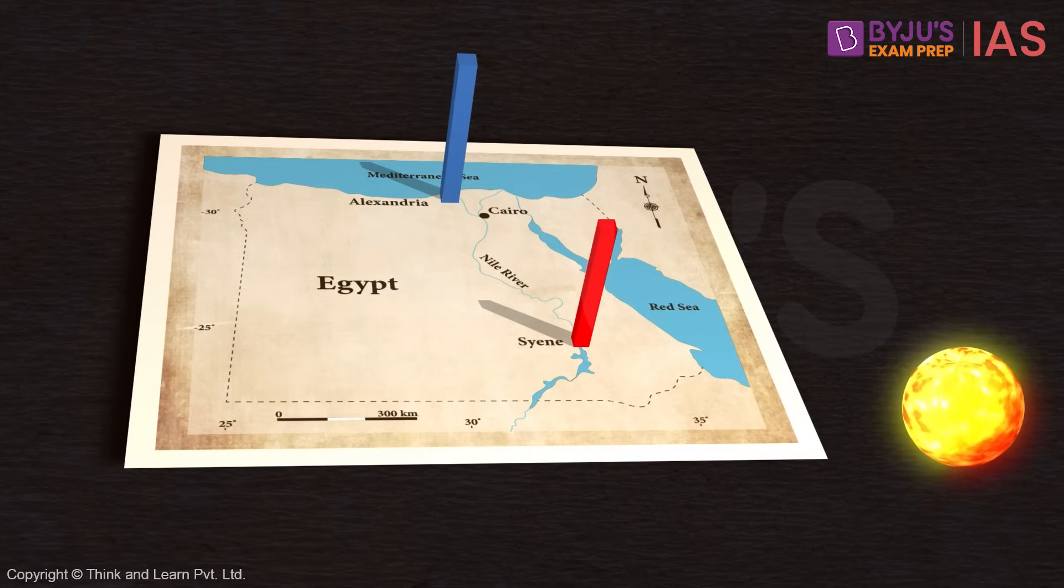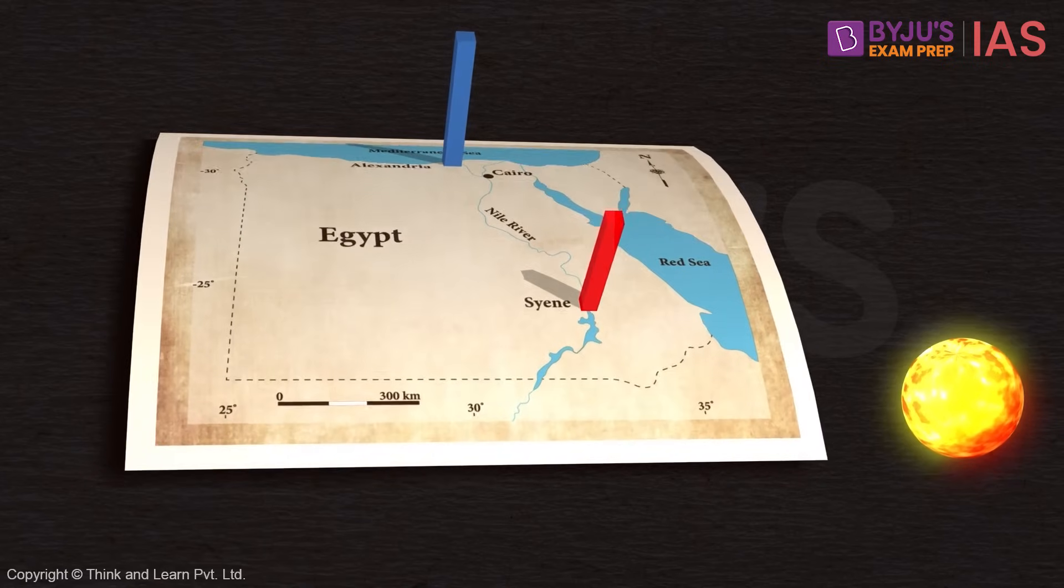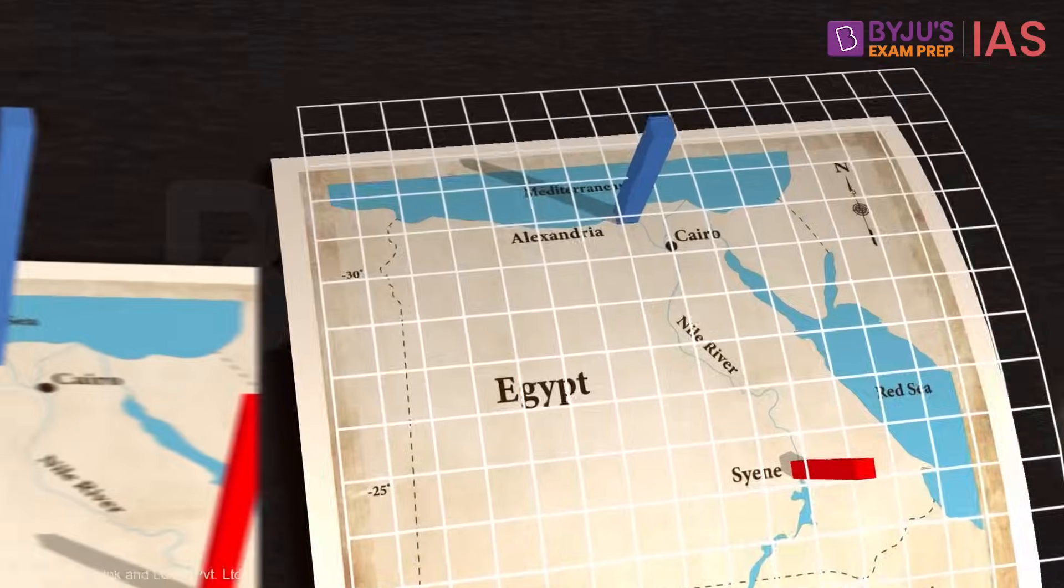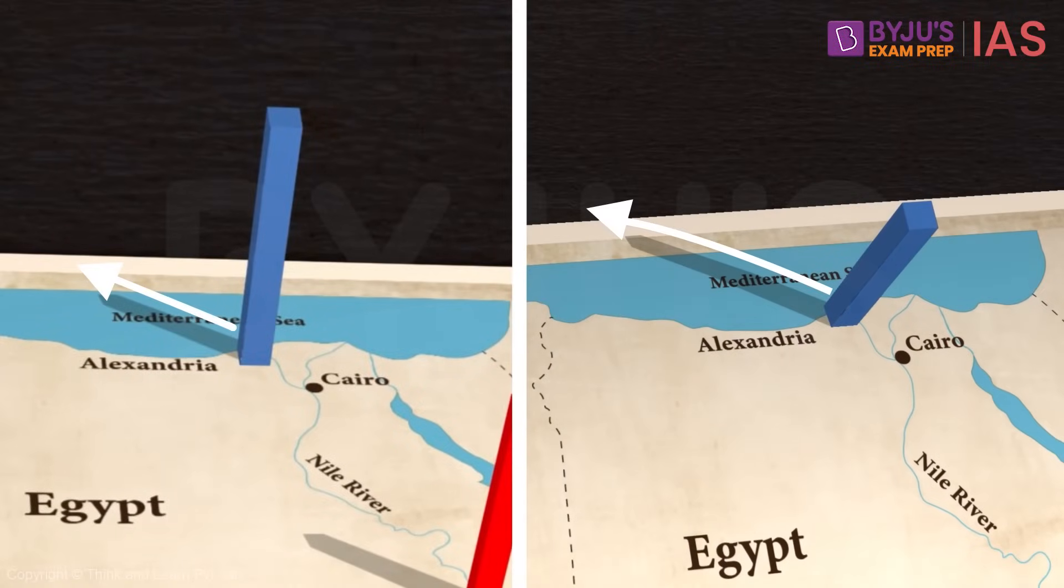This arrangement is only possible if the surface of the Earth is curved. Not only that, greater the difference in the length of the shadows, more will be the curvature.